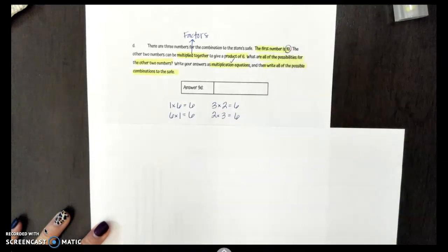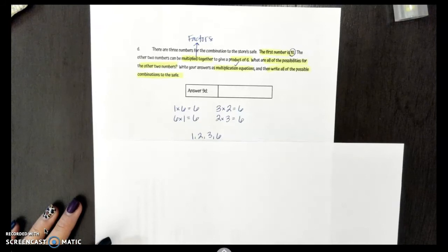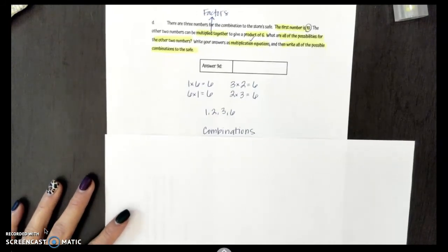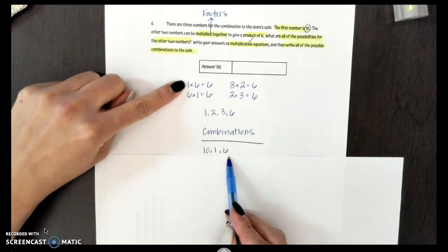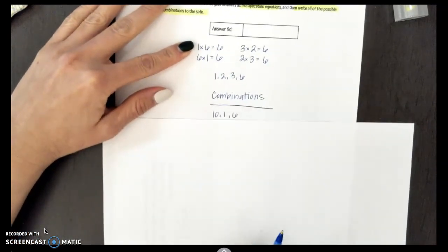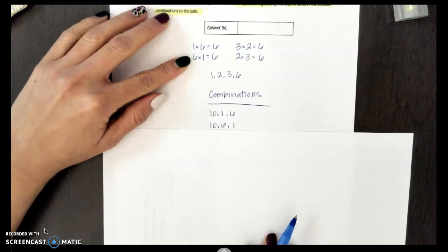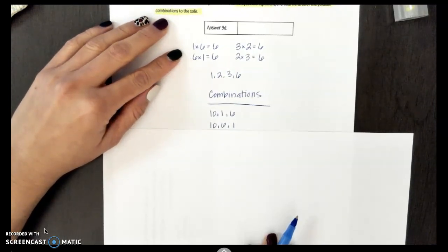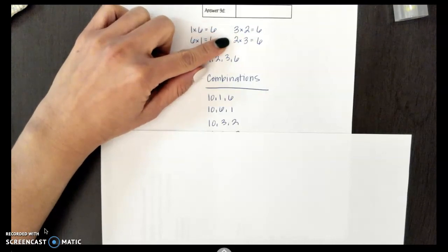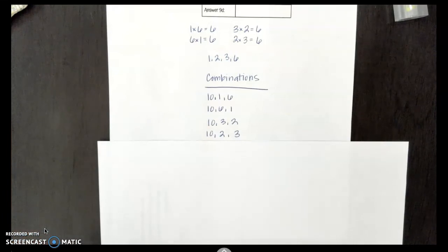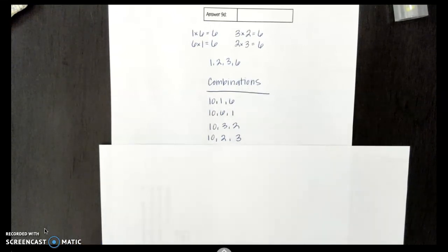And I have to remember that 10 is my first number. Cannot change it. It has to be 10. So one of the possibilities I can have is going to be 10, 1, and 6. And I'm just pulling them from my equation. My next combination has to start with 10. And it's going to be 6 and 1. Again, just using my equations. My next one has to start with, you're right, 10. And it can be 3 and 2. And my final possible combination is going to be 10, 2, and 3. Notice I can't start switching my 3s with my 6s because then they are not factors of 6.